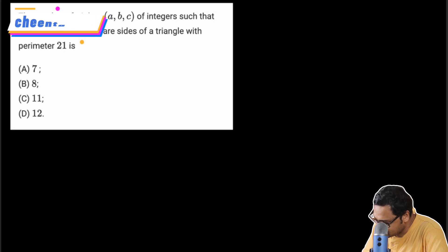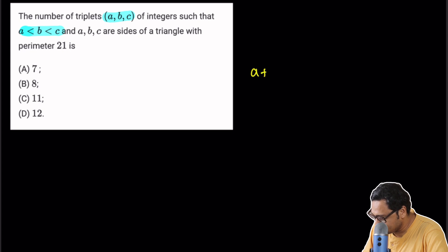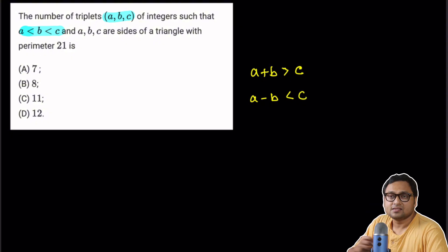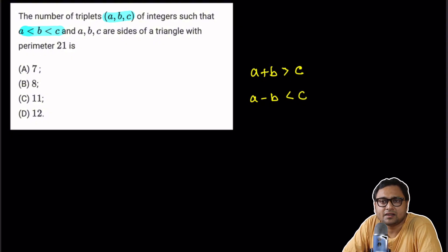So let me write it. If ABC are three sides of a triangle, then sum of two sides, A plus B, is greater than the third side. And difference of two sides, that is, A minus B, is less than the third side. So this particular inequality can be used in a variety of ways to solve problems.